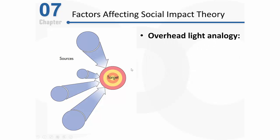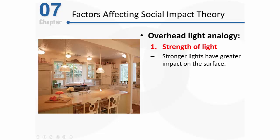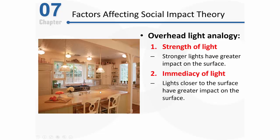One thing that's going to help is using an analogy involving lighting. Think about each one of these lights as a source of influence, and they're trying to illuminate this countertop. One factor that's pretty obvious in gauging the influence of that source is the strength of the source — in this case, the strength of the light. Stronger lights are going to have more of an impact on illuminating that surface than weaker lights. Another factor that influences the illumination of the countertop is the immediacy of any one of those light sources. Imagine if all of these lights were equal in their intensity. Because these lights are closer to the surface than these lights right here, these lights will have more influence. All things being equal, lights that are closer are going to illuminate that surface more so than lights that are further away.